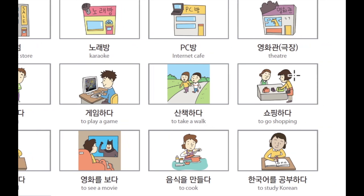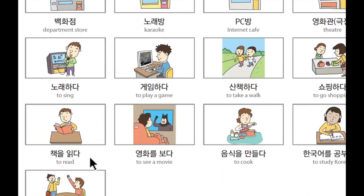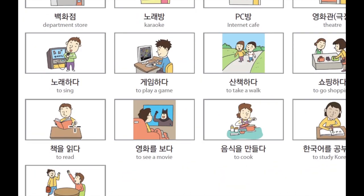그리고 쇼핑하다 — to go shopping. 쇼핑하다. 그리고 책을 읽다 — to read. 책을 읽다. 영화를 보다 — to see a movie. 영화를 보다. 음식을 만들다. 음식을 만들다 means to cook. 음식을 만들다.